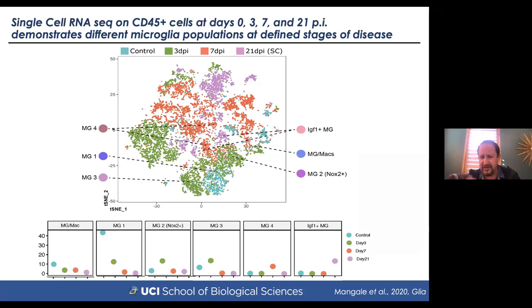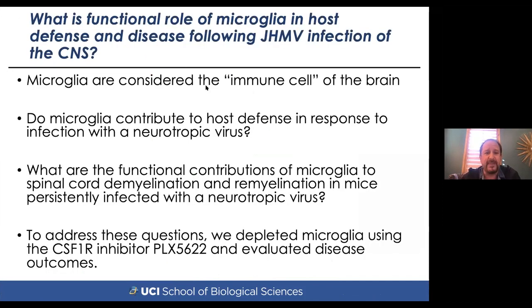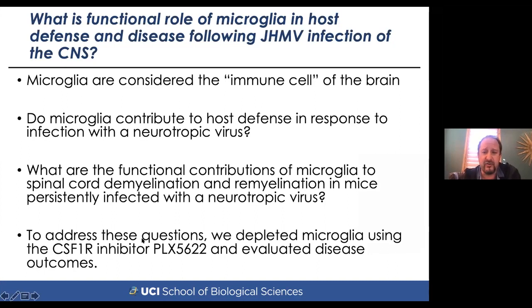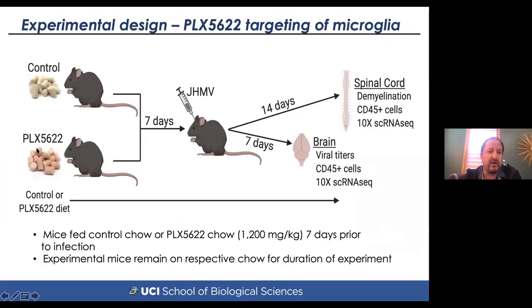These data argued that microglia may play a very important role in regulating both defense and potentially disease. Our questions were: do microglia enhance or contribute to host defense in response to infection with the neurotropic coronavirus? And what are the functions of these cells in spinal cord demyelination and remyelination in animals persistently infected with the neurotropic coronavirus? To address this, we employed depletion of microglia using a drug called PLX3622, a small molecule antagonist for colony stimulating factor 1 receptor.